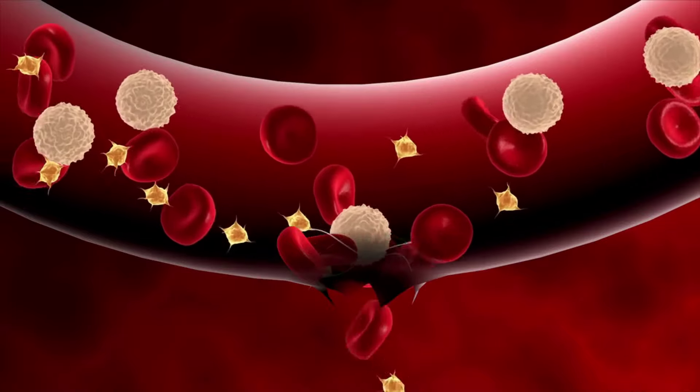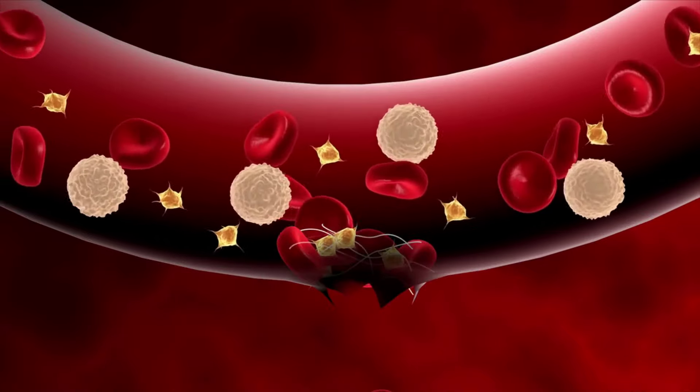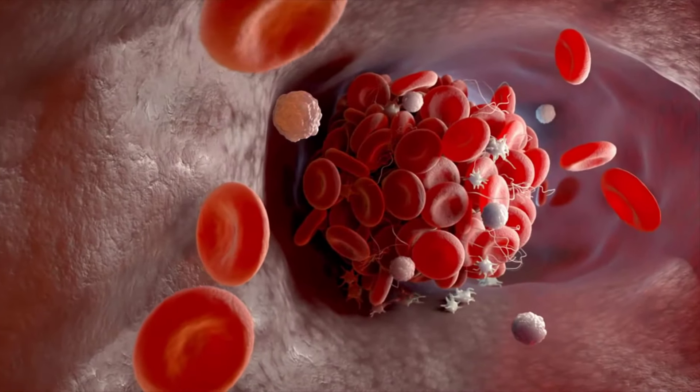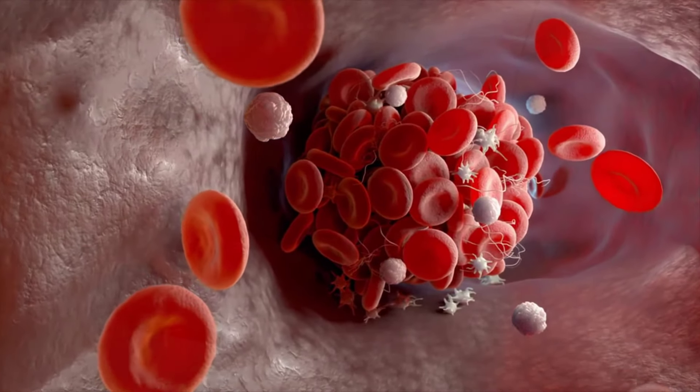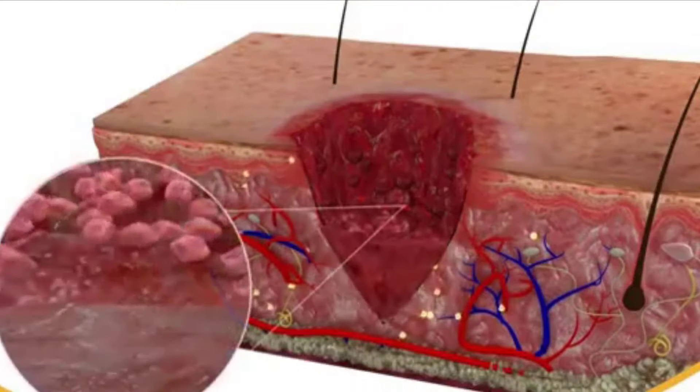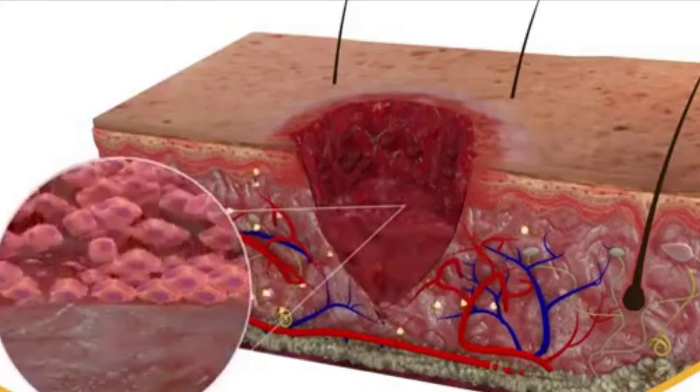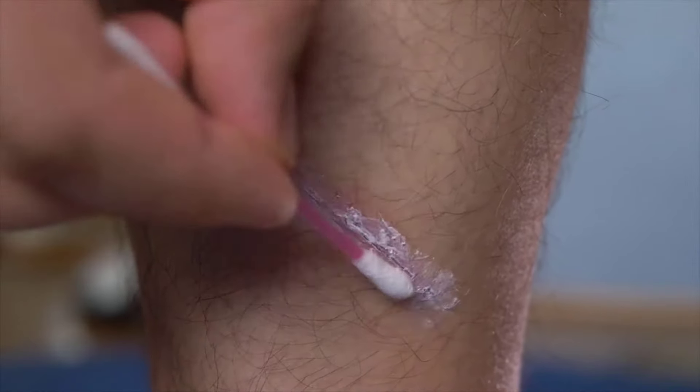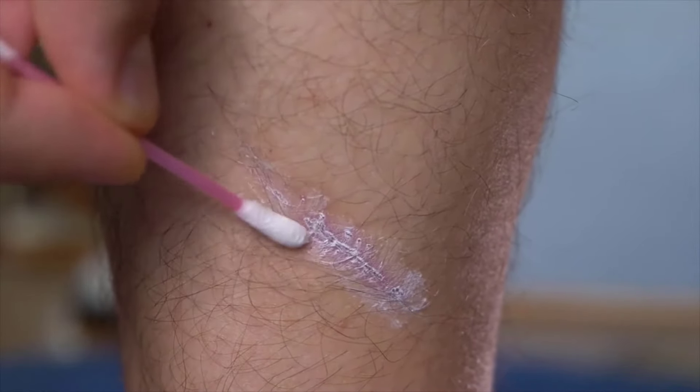Clotting or coagulation occurs, reducing blood loss from damaged blood vessels. Blood clotting forms a network of fibrin proteins that trap blood cells and bind the edges of the wound together. As the blood clot dries, a scab forms, reducing the risk of infection.